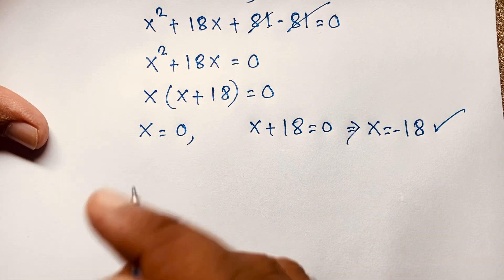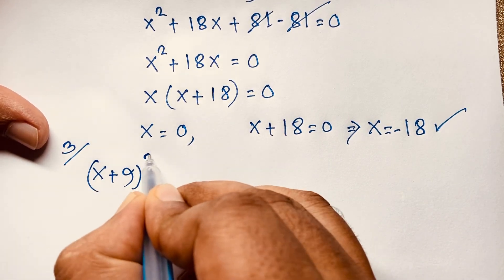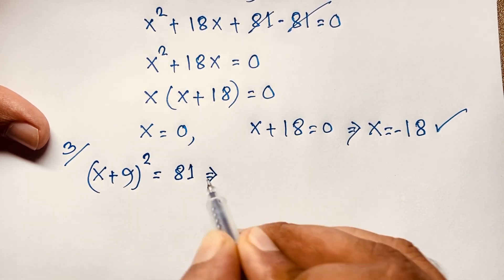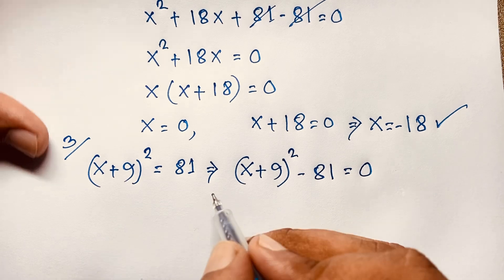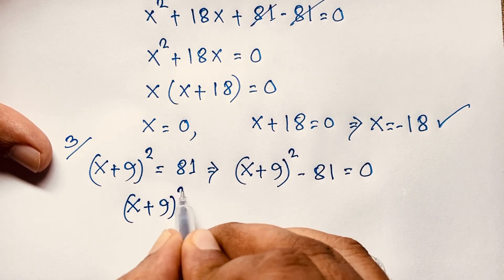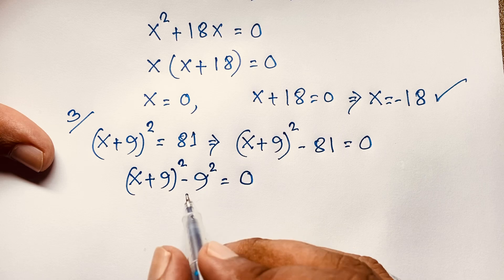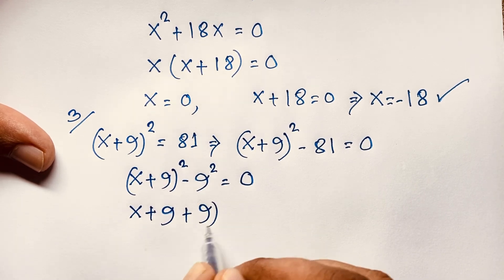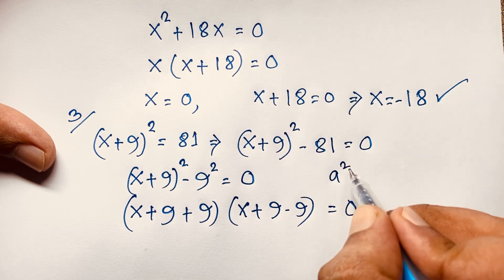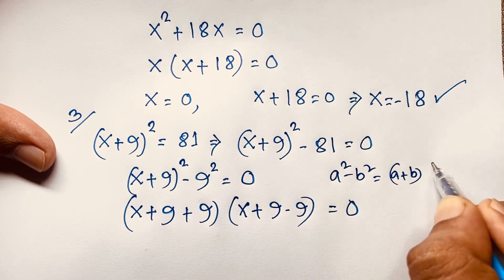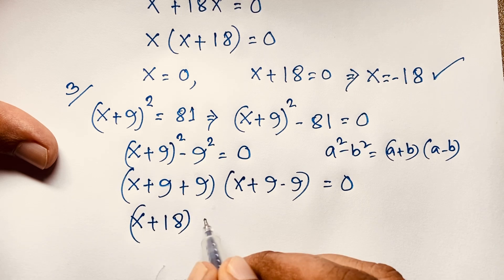Now I solve this question using another method. Our question is (x + 9)² = 81. We can write this expression as (x + 9)² − 81 = 0, which is (x + 9)² − 9² = 0. Applying the identity a² − b² = (a + b)(a − b), this gives (x + 18)(x) = 0.